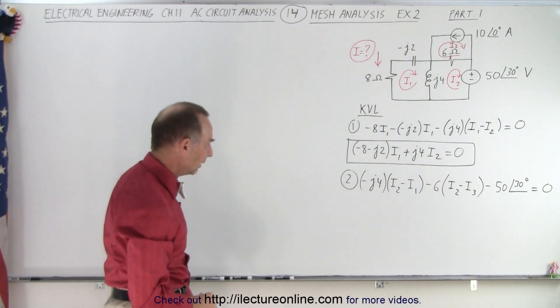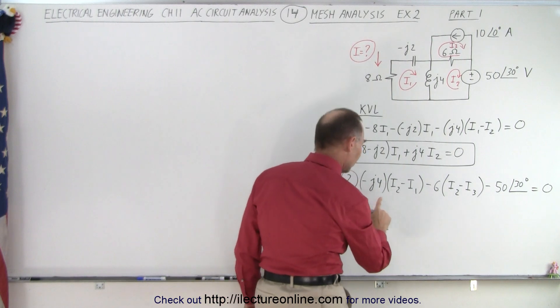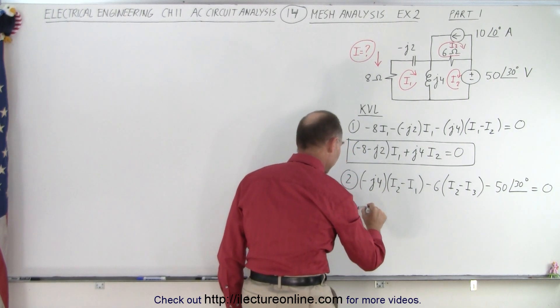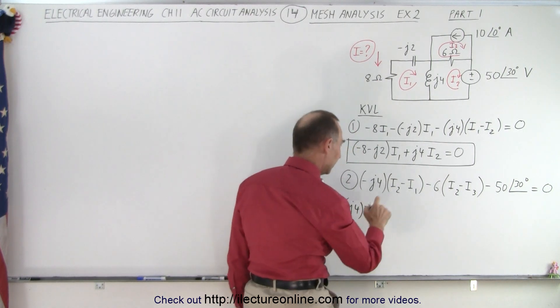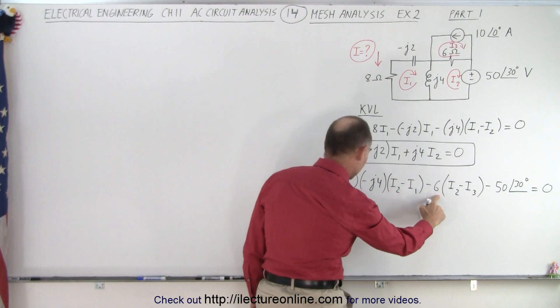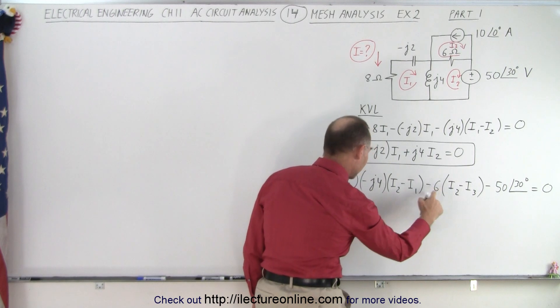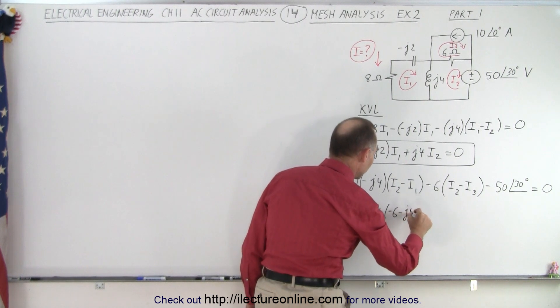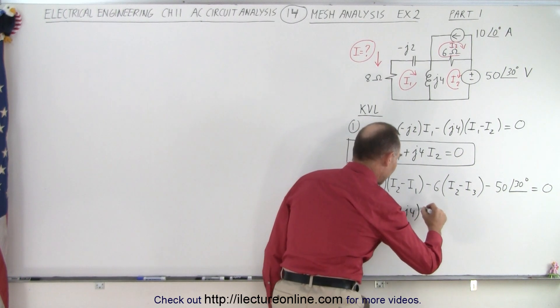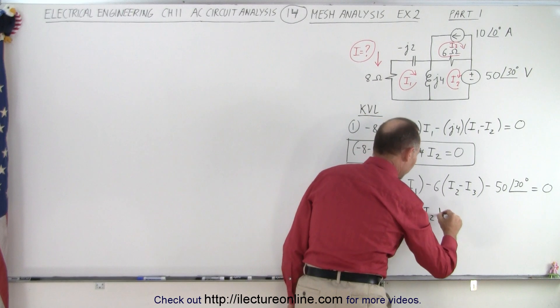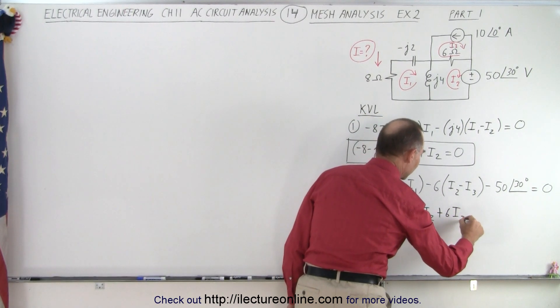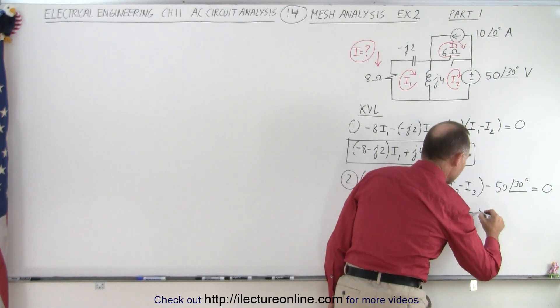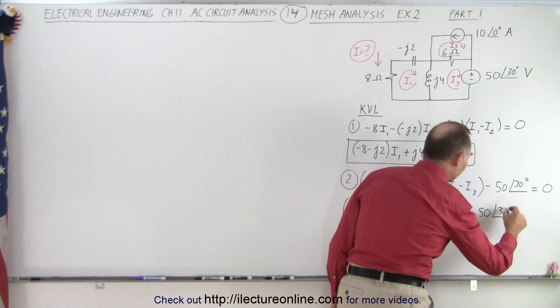All right, now we want to work on that a little bit by combining all the like currents. So we have one I1 term, so we have a positive J4 times I1 like this. We have an I2 here and an I2 there, so we have a minus 6 and a minus J4, so that's minus 6 minus J4 times I2. And we have a minus times a minus, or a plus 6 times I3. And then we move that to the other side, that becomes a plus 50 with a phase angle of 30 degrees.